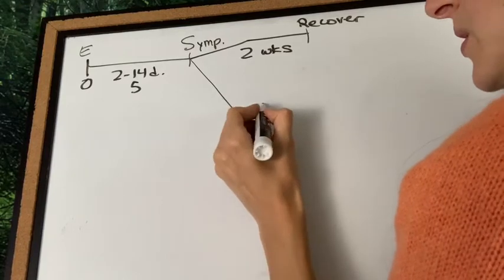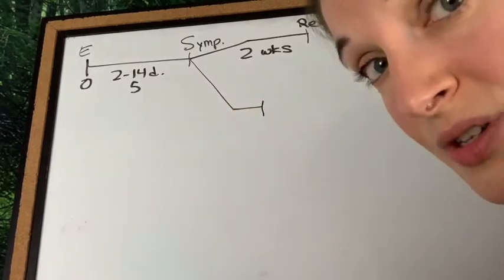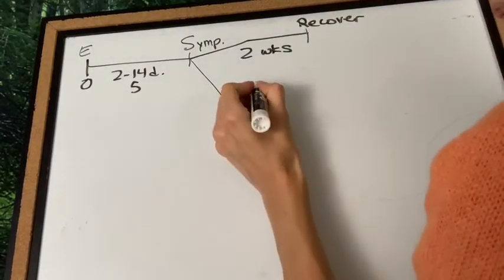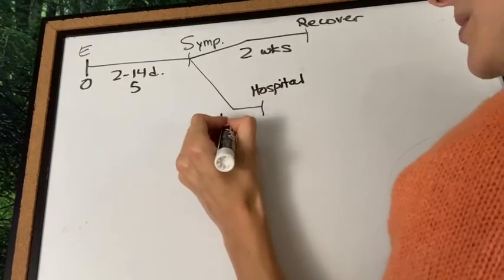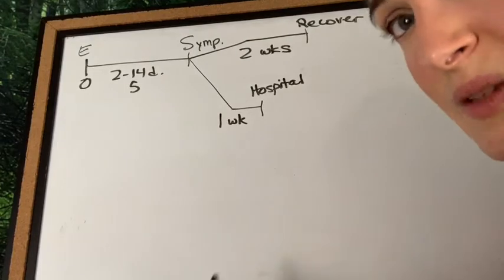Unfortunately, some people, their symptoms get worse and they need to go to the hospital. On average, the time from when symptoms start to when somebody goes to the hospital is about a week.